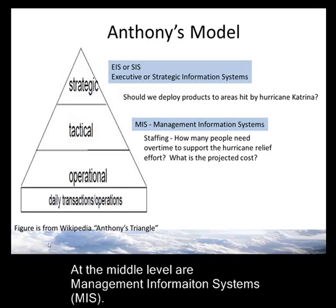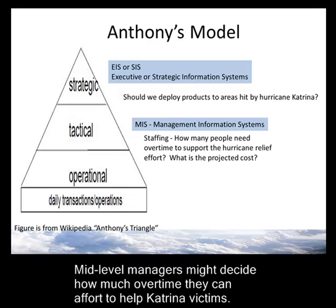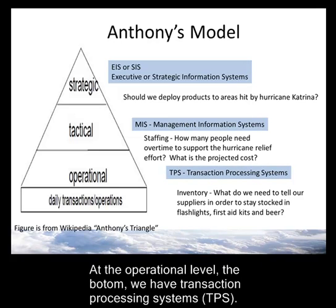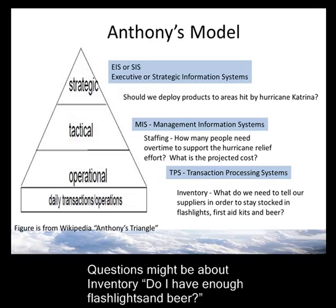At the middle level — the MIS level — mid-level managers are making decisions that tactically run the organization. They might have staffing decisions regarding the Hurricane Katrina redeployment of products, such as: how many people need overtime to support the hurricane relief effort, or what is the projected cost of supporting the hurricane victims? At the operational level, transaction processing systems handle questions related to daily transactions. Inventory is a good example — what do we need to tell our suppliers to stay stocked in flashlights, first aid kits, and beer? This model gives us a simple way to categorize and understand different information systems at different organizational levels.